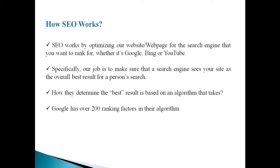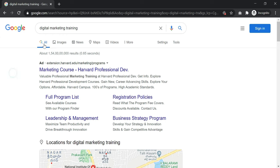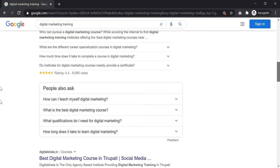We should optimize our pages properly for Google, YouTube, or any search engine. Google has over 200 ranking factors in their algorithm. Based on these 200 factors, Google determines the best results. Now, what is the difference between organic and paid results? For example, when you search 'digital marketing training,' some results appear at the top with an 'Ad' label — those are paid results.